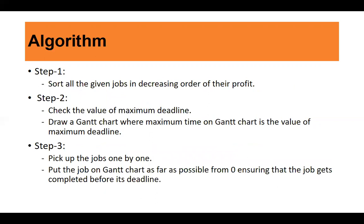Let us look at the algorithm for job scheduling. Step one: sort all given jobs in decreasing order of their profit. Step two: check the value of the maximum deadline, as this determines how many time slots are available. Draw a Gantt chart where the maximum time of the chart equals the value of the maximum deadline. Step three: pick up jobs one by one from the sorted list and place each job on the Gantt chart as far from zero as possible, ensuring the job is completed before its deadline.